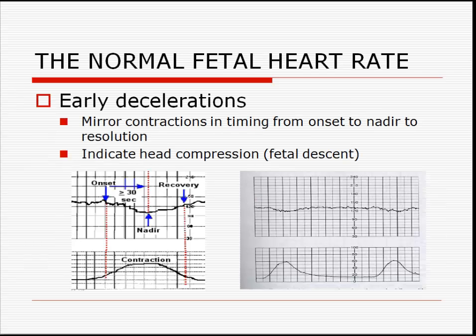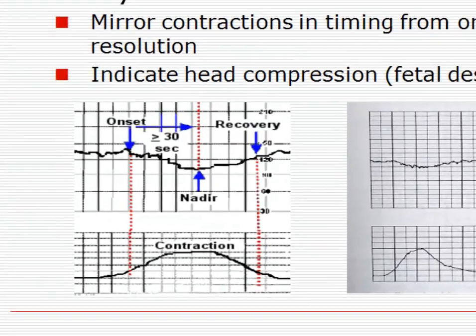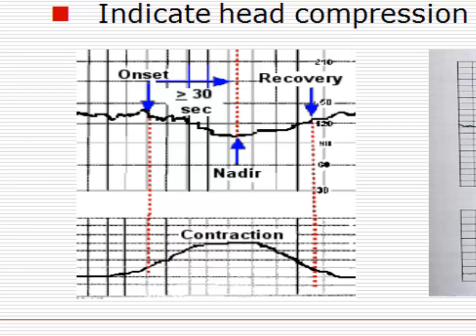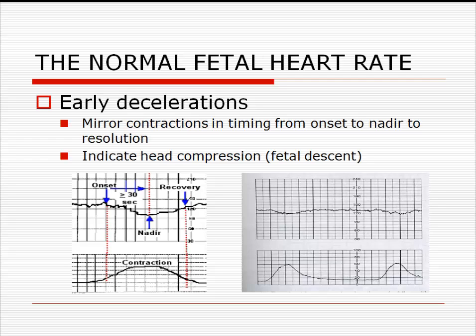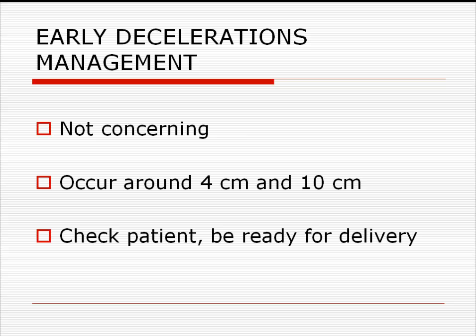Early decelerations are considered a normal finding on a fetal monitoring strip. They are diagnosed by comparing the timing of the deceleration with the occurrence of a contraction. If the deceleration mirrors a contraction — meaning the fetal heart rate deceleration starts when the contraction starts, reaches its low point at the peak of the contraction, and ends when the contraction ends — it is an early deceleration. Early decelerations occur as a reflex cardiac response to compression of the fetal head. They do not represent fetal oxygen status, and their presence often means the baby is descending in the birth canal and delivery could be near. Management of early decelerations is suggested here.